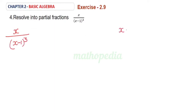The factors of the denominator (x minus 1) whole cube are (x minus 1), (x minus 1) whole square, and (x minus 1) whole cube.